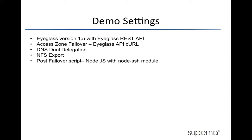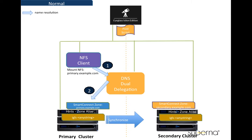Now we want to show you the setup diagram for this demo. The first diagram is the setting prior to failover. We can see here that the NFS client is accessing the NFS export from the primary cluster, and the SyncIQ replication pair has also been configured and it is in operation to replicate data from primary to secondary cluster.